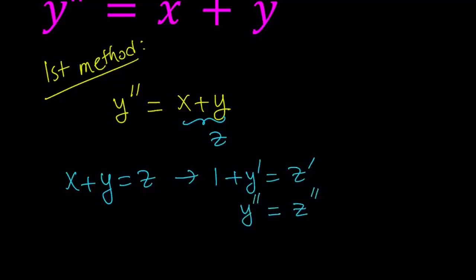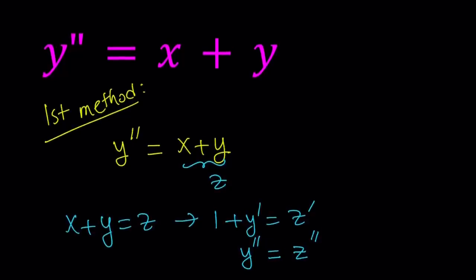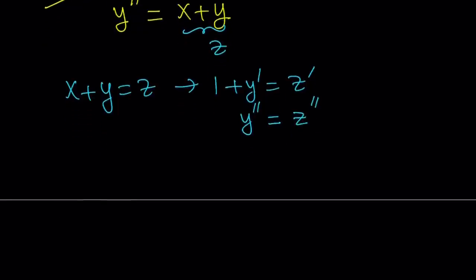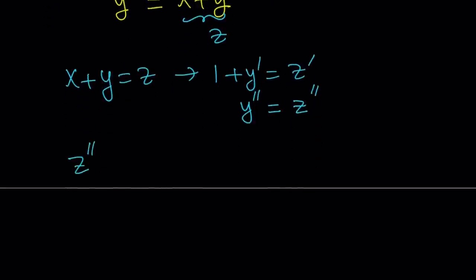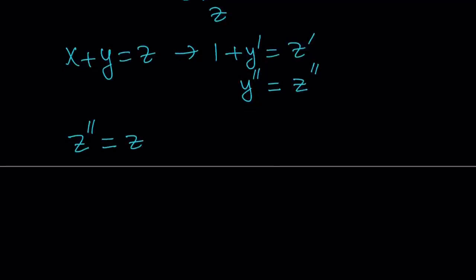That's really cool because now we can replace y double prime with z double prime. So that's the substitution — we replace y double prime with z double prime and x plus y with z. That gives us a very simple differential equation. To solve this, I'm going to put z on the left-hand side, so it's going to be z double prime minus z equals 0.